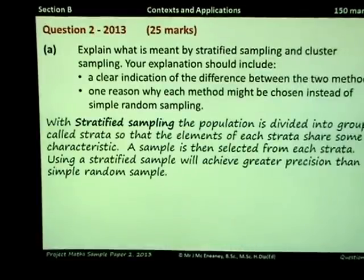With stratified sampling, the population is first divided into groups which are called strata, so that the elements of each strata share some common characteristic, i.e. age groups or gender. A sample is then selected from each strata. Using stratified sampling will achieve greater precision than a simple random sample. This would be the advantage of using stratified sampling over simple random sampling.